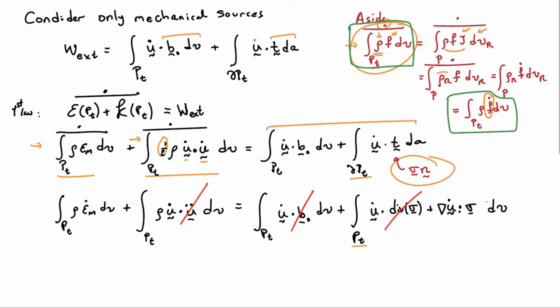We can now cancel several terms. The second term on the left, together with the first and second terms on the right-hand side, form the equilibrium equation — divergence of sigma plus body force equals density times acceleration — dotted with u-dot. Gathering those terms and factoring out u-dot, those three terms cancel.